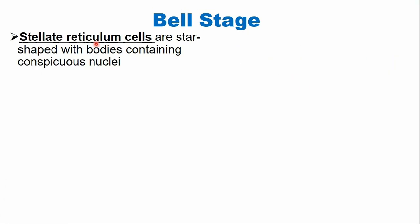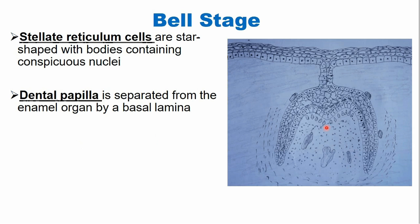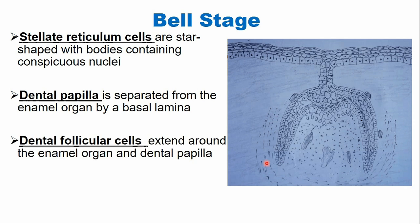There are some cells called stellate reticulum cells — star-shaped cells. These cells basically provide mechanical protection to the cells present below them. The dental papilla cells are separated from the inner enamel epithelium by a basement membrane, and there is a cell-free zone as well. Cells present around the enamel organ and dental papilla are known as dental follicular cells, and in this area there are more collagen fibers.